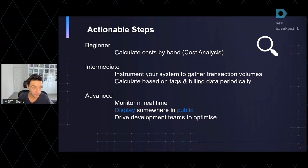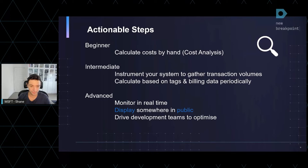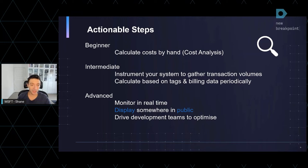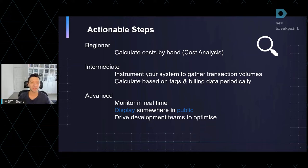At the intermediate level, you gather transaction volumes in real time from your systems, but still calculate by hand based on tags, resource groups, and billing data on a periodic basis. Moving up that chain of maturity, monitor it in real time — plug those transaction rates into something like Event Hubs. What is my average transaction flow versus my infrastructure cost? Put it in the corner and say 'dev team, optimize this.' This becomes your measure. I've worked in organizations where we've had a pseudo taxi meter and you can see the cost of cloud ticking by.